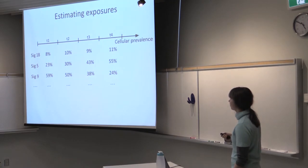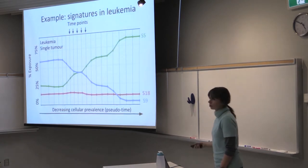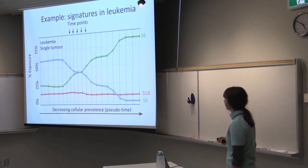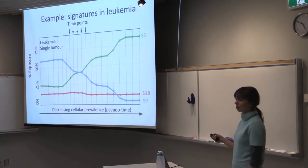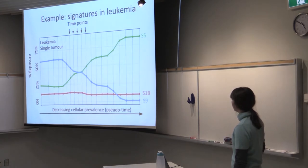For example, signature 17 was increasing from 23% to 30% to 43% and so on. And we can visualize it as a trajectory across pseudo-time. So again, on x-axis we have decreasing cellular prevalence. On y-axis we have percentage of signature exposure. And each line here corresponds to the trajectory of the particular signature.